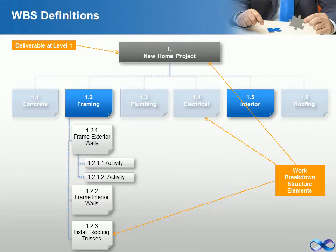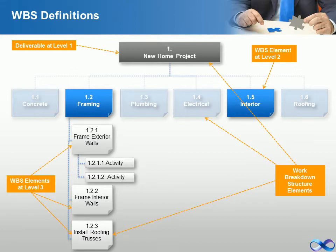Deliverable is often used more narrowly in reference to an external deliverable, which is a deliverable that is subject to approval by the project sponsor or customer. Phase: the phase is a major component within the project life cycle. When creating a process-based work breakdown structure, the phase is the highest level within the work breakdown structure. Activity: the lowest level within the work breakdown structure. Activities are where deliverables are assigned to an individual, who will perform some work process to create the deliverable. Therefore, the activity is a combination of deliverable and process.